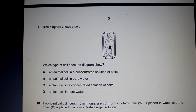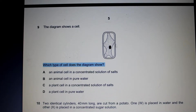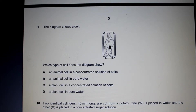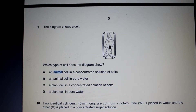Question 9 shows a diagram of a cell. Which type of cell does the diagram show? We can see that this diagram has a cell wall, so it has to be a plant cell. We can also see that this plant cell has lost water, since the plasma membrane is pulled away from the cell wall, which means that the cytoplasmic volume has decreased because water has been lost.